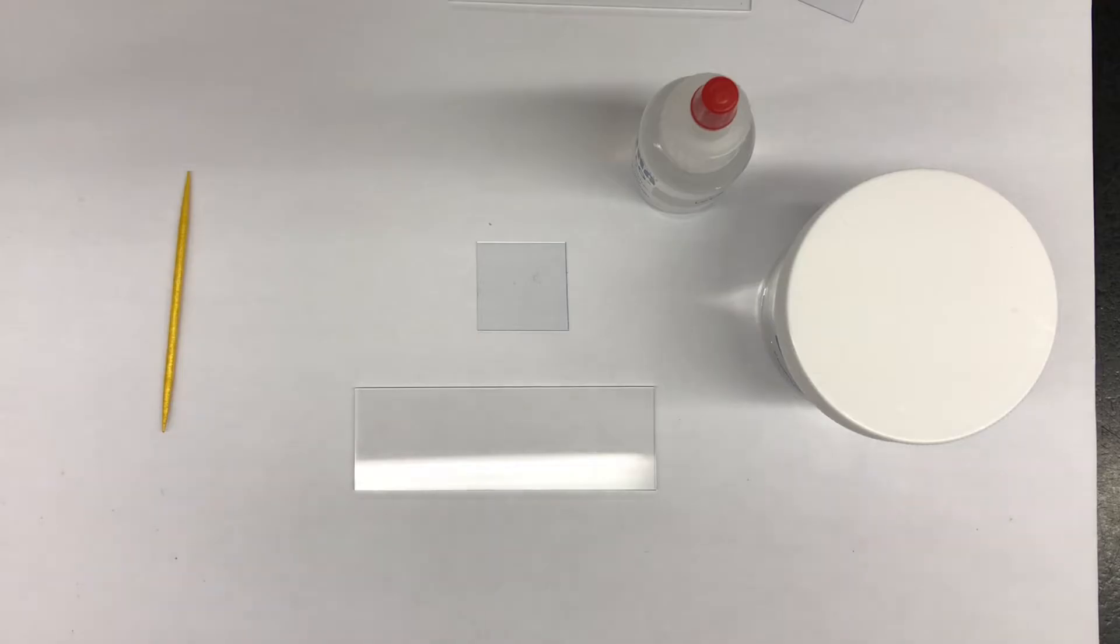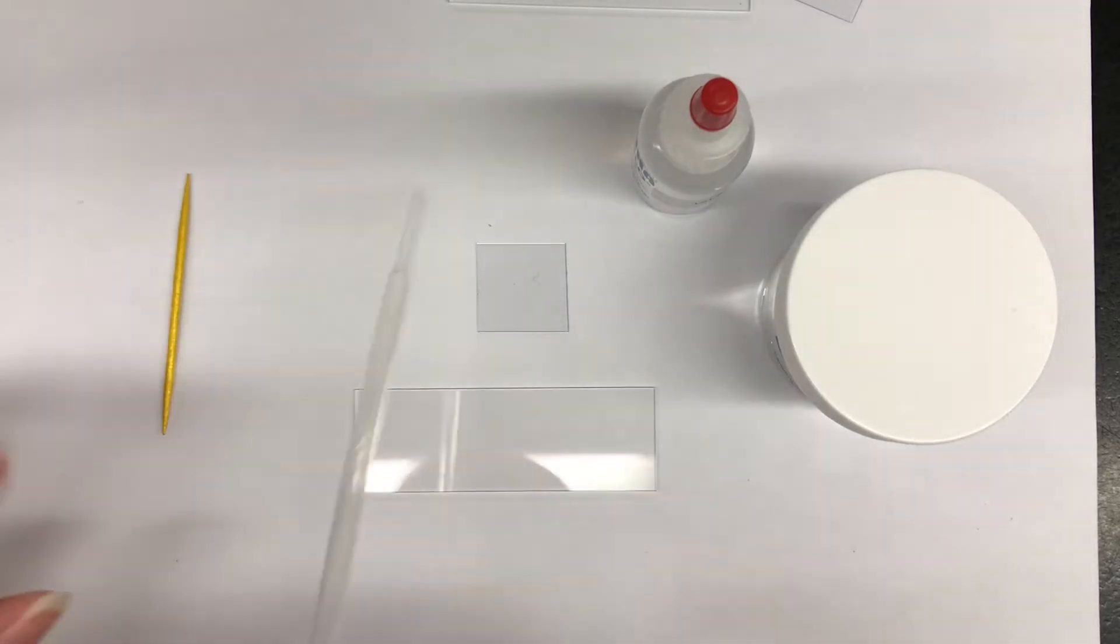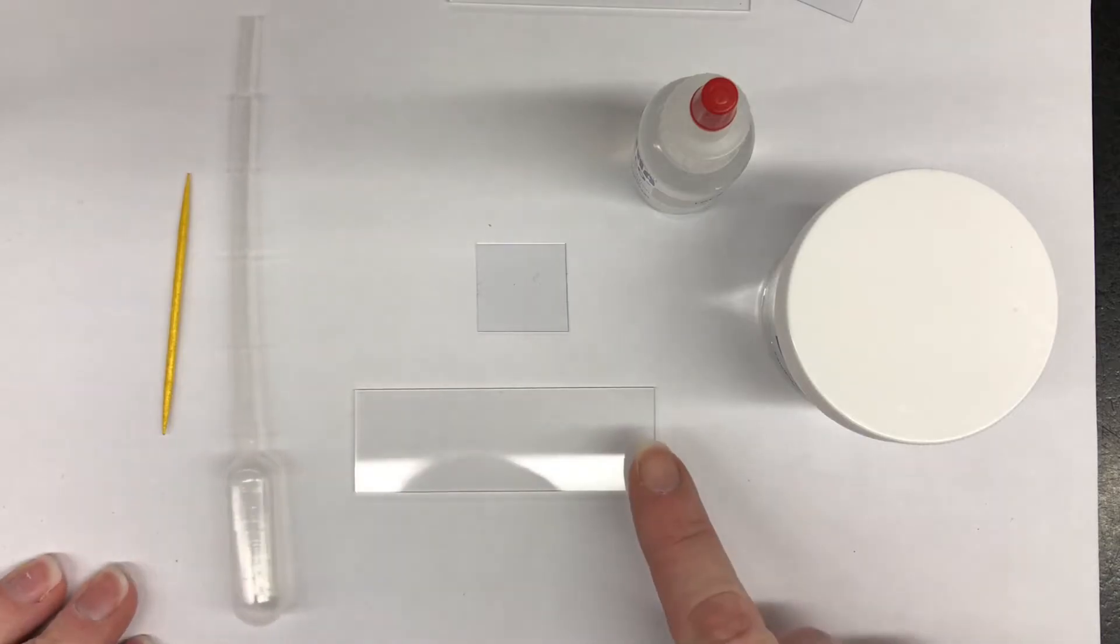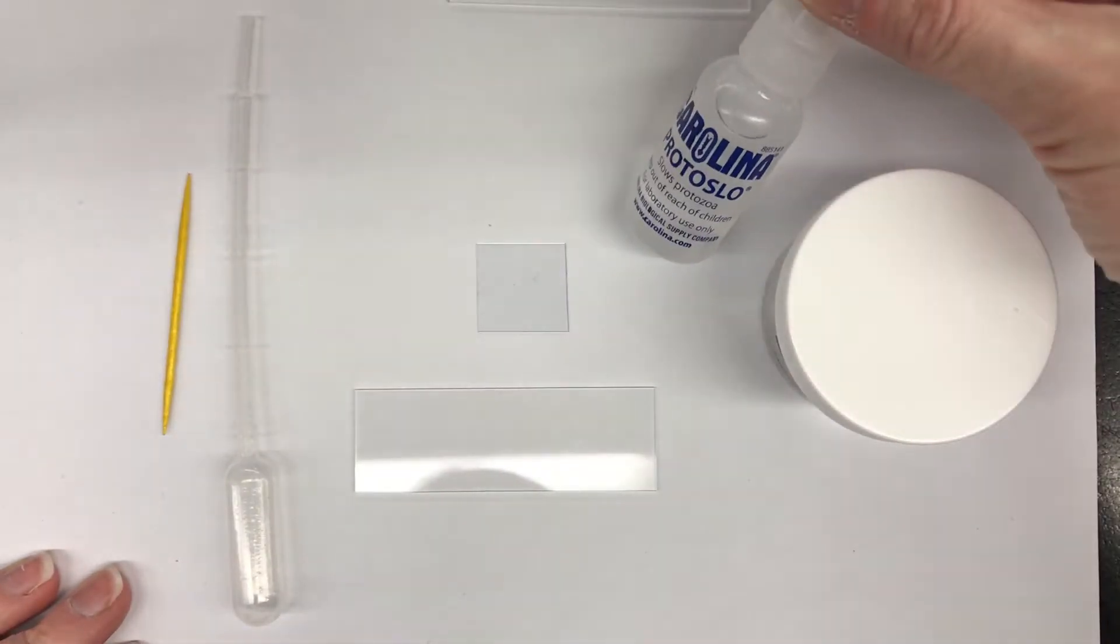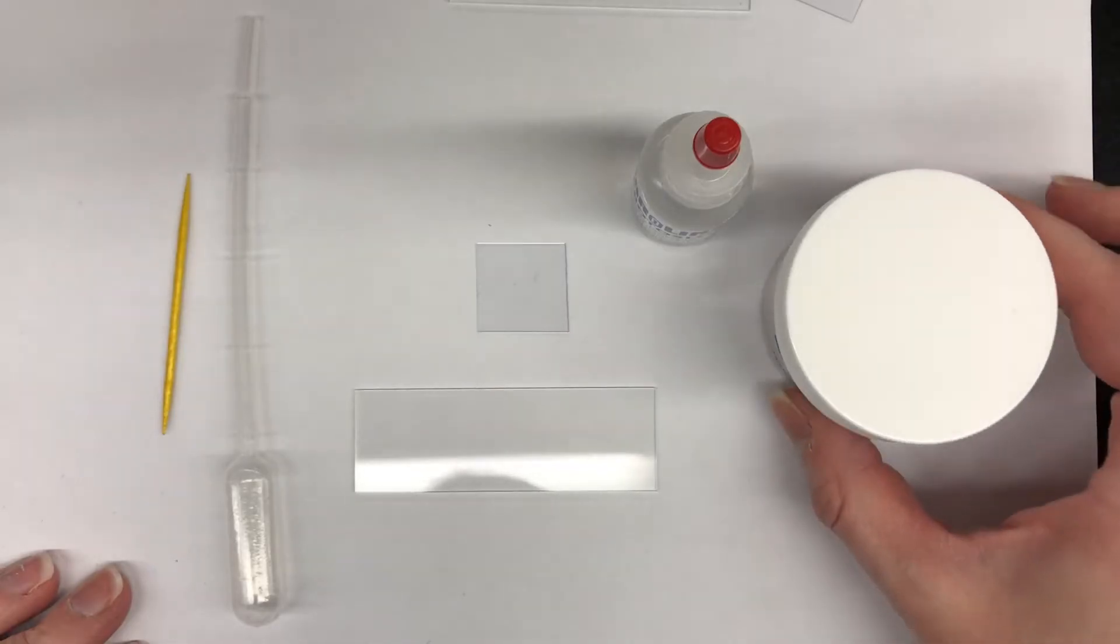When making your wet mount slide, you want to start with a toothpick, a plastic pipette, a glass slide, a cover slip, your protosloe, and your specimen sample.